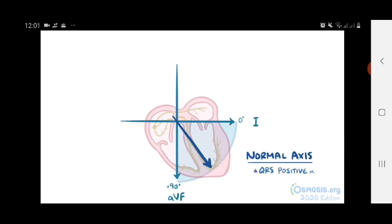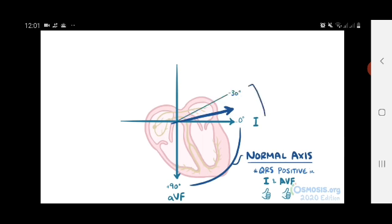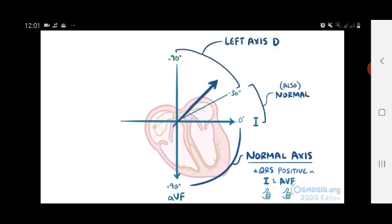If it's positive or up on an ECG in 1 and AVF, you can imagine that's like seeing two thumbs up, meaning that everything's okay. If the vector is positive in lead 1 and negative in AVF, then it's in this quadrant, and it could also be normal if it's between 0 and negative 30 degrees. If it's between negative 30 and negative 90 degrees though, it could be considered left axis deviation.